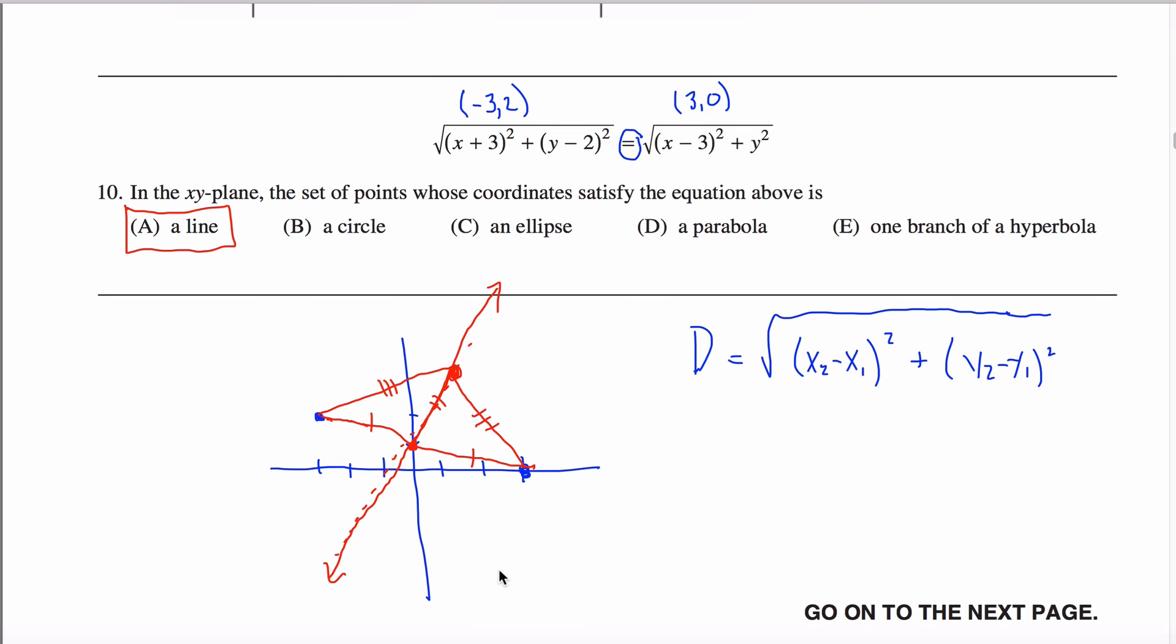Specifically, it's the line perpendicular. It's the perpendicular bisector to the line segment connecting these two points. But you don't got to do all that. You just got to tell it what shape it has, and the shape is a line.